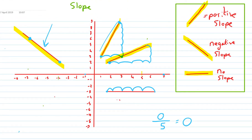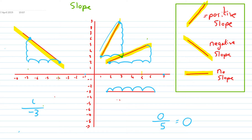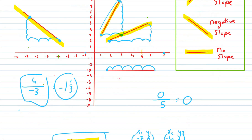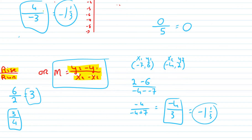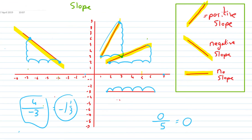Let's do one more using the rise over run method. I'm going to start here and run backwards — so that's minus three. And I rose four. So it's four over minus three, which is minus one and one third. And remember we got minus one and one third when we used the formula method earlier as well. Also, if I started at the top and rose down the way, it would still be minus one and one third.